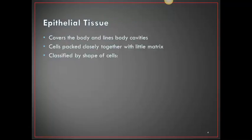Epithelial tissues cover the body and line the body cavities. Cells pack closely together with little matrix and are classified by the shape of the cell. The shapes of the cell can be squamous, cuboidal, columnar, and transitional.